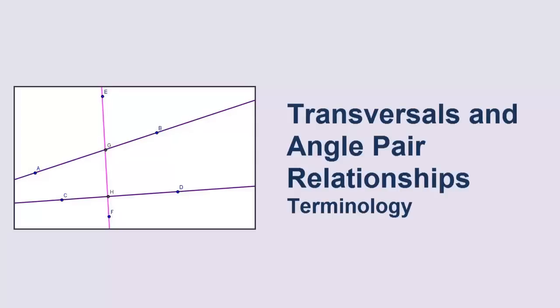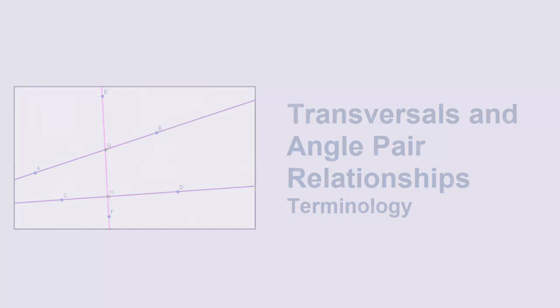Intersecting lines create a number of angles with a variety of relationships. In order to understand the postulates and theorems surrounding these relationships, we first have to understand the terminology.